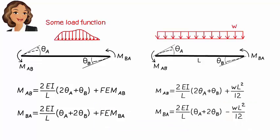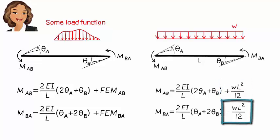Note that here too we are using counter-clockwise direction as positive. So the positive fixed-end moment represents a counter-clockwise moment, whereas the negative value represents a clockwise moment.